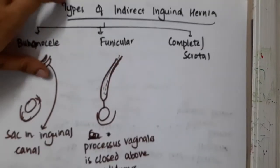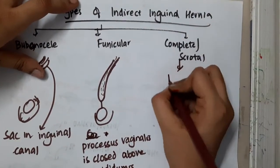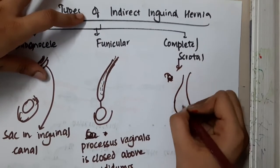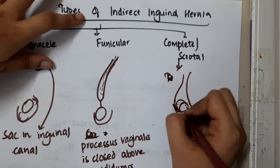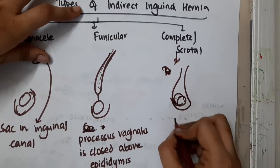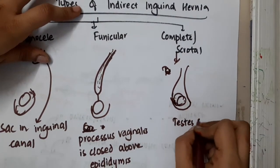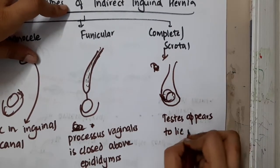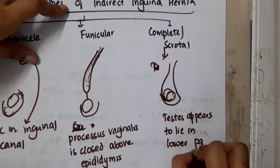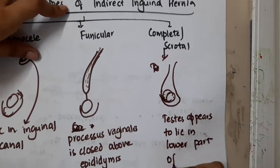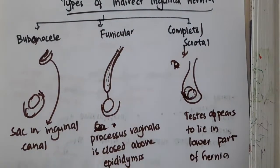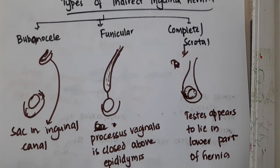In the complete or scrotal type, the sac is continuous — you cannot feel it separate. The testes appears to lie in the lower part of the hernia; you cannot separate the testes and the hernia. All the herniated part is present in the scrotum. These are the types of indirect inguinal hernia.